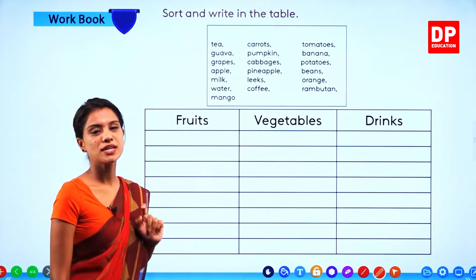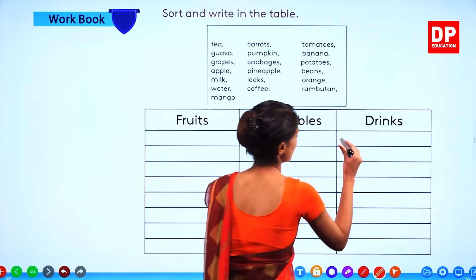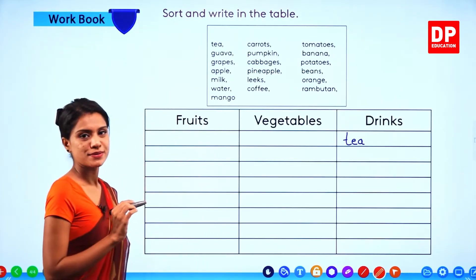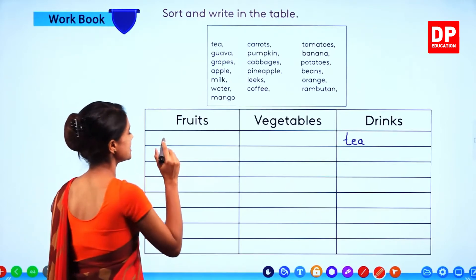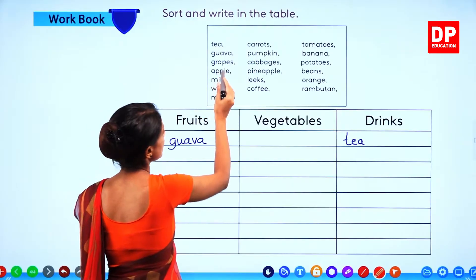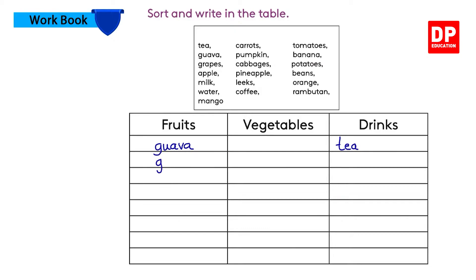First one: tea. What do you think? Is it a fruit or a vegetable? No. It's a drink. Then you write it here — tea. Then guava. What is it? Guava — koyya palam. So where do you write it? Fruit. G-U-A-V-A. Guava. Grapes — grapes is trachi. It's a fruit. Grapes.